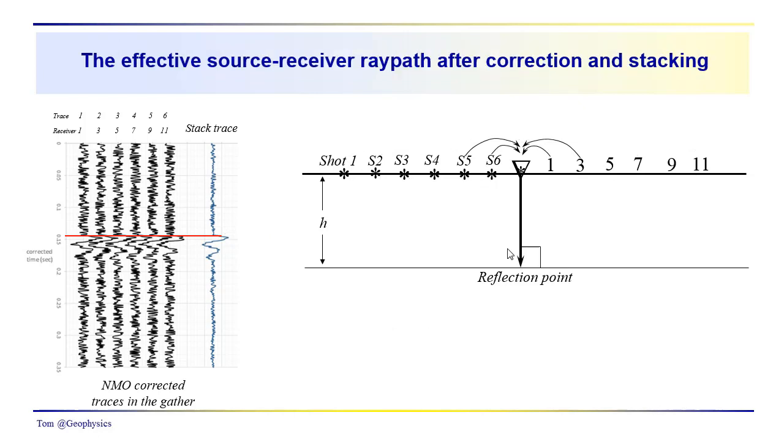The effective trace that we end up with is what's referred to as a normal incidence trace. You can see it's normal incidence. We've taken all the sources and receivers, so geometrically we've arranged them so they're located at the same point. If we detonate a source, the ray path will go down to the reflection point, reflect at a right angle, and come back directly to that receiver.